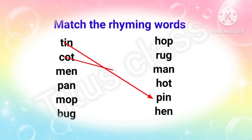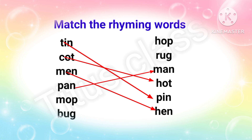Second: cot — matches with hot. Third: hen — matches with pen. Fourth: pan — matches with man. Fifth: mop — matches with hop. And last one: bug — matches with rug.